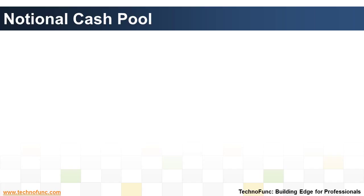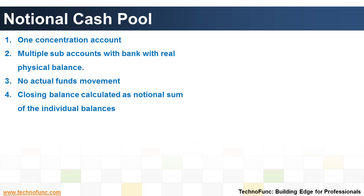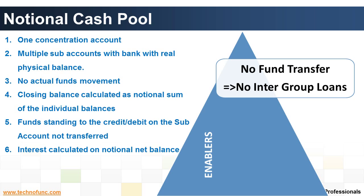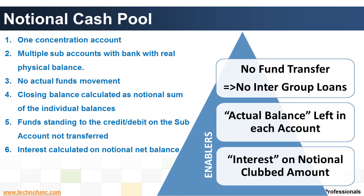In a notional cash pool, the cash pooling is notional, meaning there are no physical transfers between the accounts. Single balance accounts are added together and netted against each other. A notional cash pool is a structure involving several related accounts whose balances have been aggregated for the purposes of optimizing interest paid or received. A bank looks only at the total balance of the accounts in the notional pool when calculating interest, but there is no physical movement of funds.